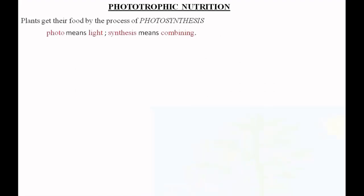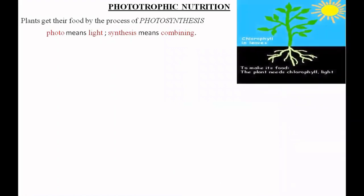Now let us learn about phototrophic nutrition. As you all know, plants undergo the process of photosynthesis to make their own food. 'Photo' means light and 'synthesis' means combining, so the term photosynthesis means combining by light. During photosynthesis, water is combined with carbon dioxide in the presence of light and chlorophyll to produce glucose and oxygen.